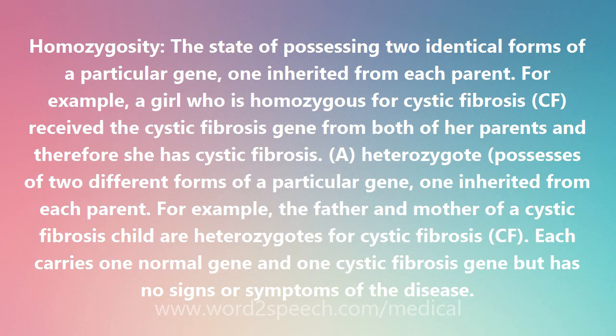A heterozygote possesses two different forms of a particular gene, one inherited from each parent. For example, the father and mother of a cystic fibrosis child are heterozygotes for cystic fibrosis (CF). Each carries one normal gene and one cystic fibrosis gene but has no signs or symptoms of the disease.